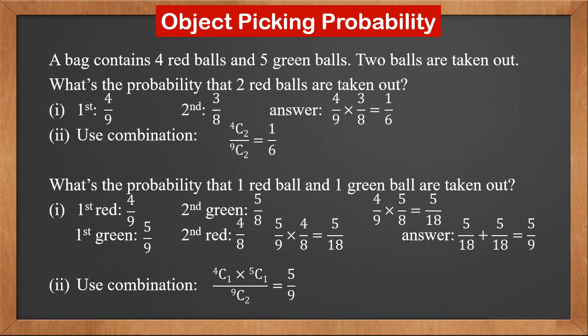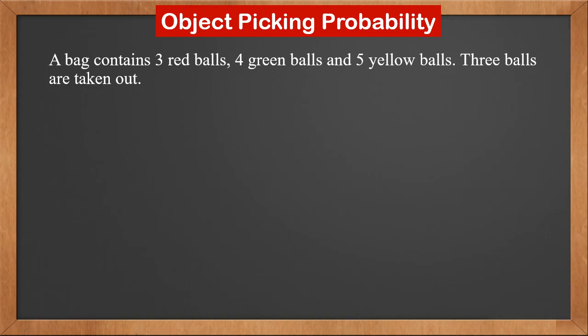From this example, we can see that if we use the probability approach, we need to consider the order of the balls taken out and do a full permutation of them all. This increases complexity and can be error prone. Therefore, the combination approach is recommended. Let's look at how complicated it can get if we use the probability approach to calculate object picking probability.